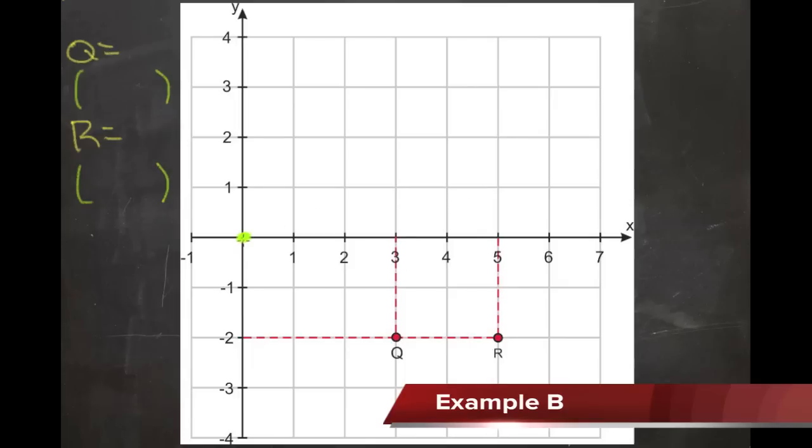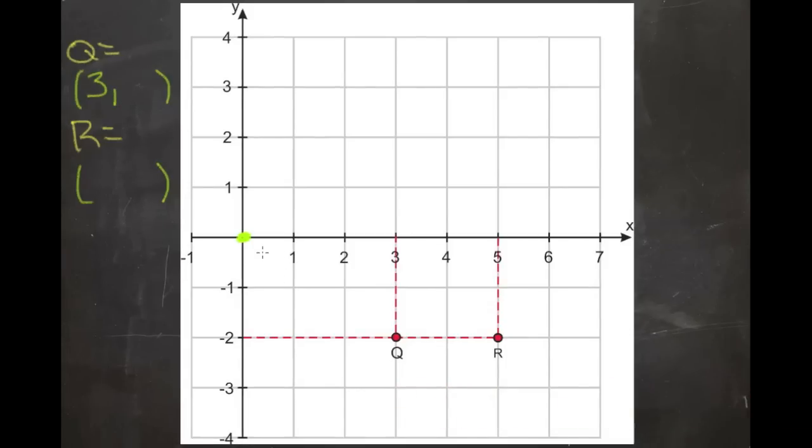we start by figuring out how far over we move on the x-axis: 1, 2, 3 points. So our x-coordinate for point Q is 3. The y-coordinate is -2, so point Q is (3, -2).